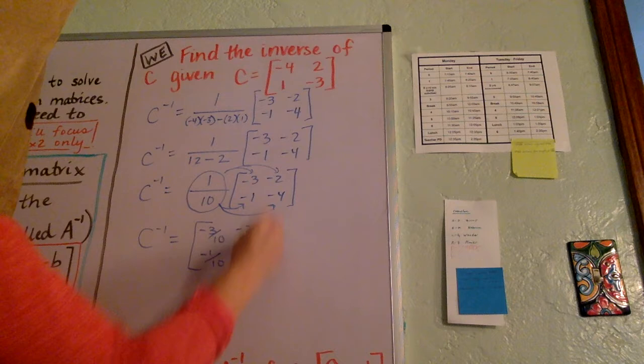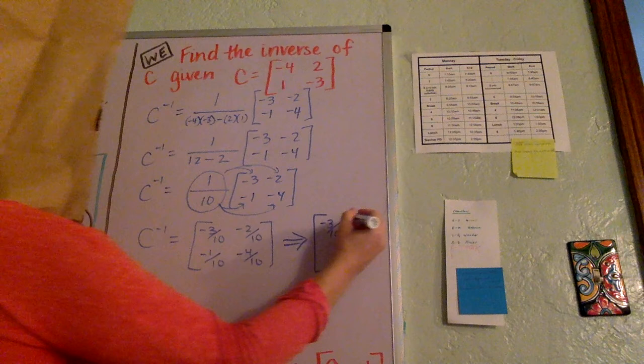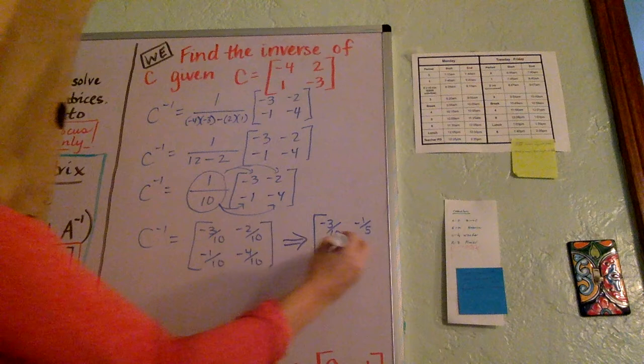And you can actually leave it like this, but it would be perhaps a little bit nicer if you would just go ahead and simplify these two. So we have negative 3 tenths. 2 over 10 simplifies to 1 fifth, and it's negative. Negative 1 tenth we can't simplify, and 4 tenths is 2 fifths, and don't forget it was negative.